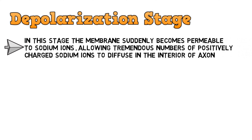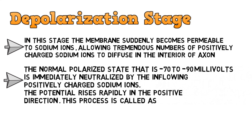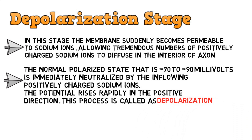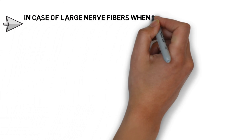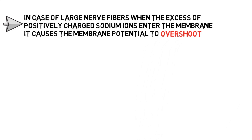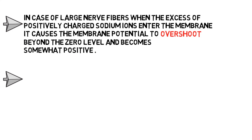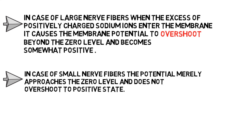Coming to the next stage — the depolarization stage. In this stage, the membrane suddenly becomes permeable to sodium ions, allowing tremendous numbers of positively charged sodium ions to diffuse into the interior of the axon. The normal polarized state of −70 to −90 millivolts is immediately neutralized by the inflowing positively charged sodium ions, and the potential rises rapidly in the positive direction — this process is called depolarization. In large nerve fibers, the excess sodium ions cause the membrane potential to overshoot beyond zero and become somewhat positive. In small nerve fibers, the potential merely approaches zero and does not overshoot.